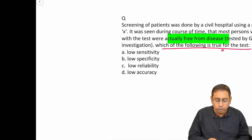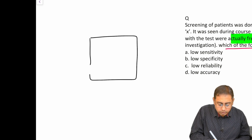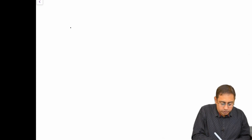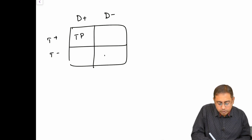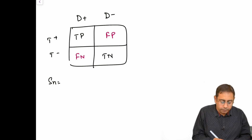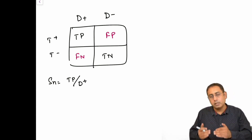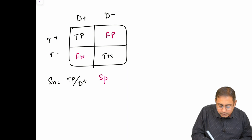Let's have a brief review — you must have already done this during your chapter on screening of disease. This is the standard 2x2 table: on the left side you have disease-plus and disease-minus, and the rows are test-plus and test-minus. The cells represent true positive, true negative, false positive, and false negative. Sensitivity is given by the formula: true positive divided by D-plus, which is true positive plus false negative.